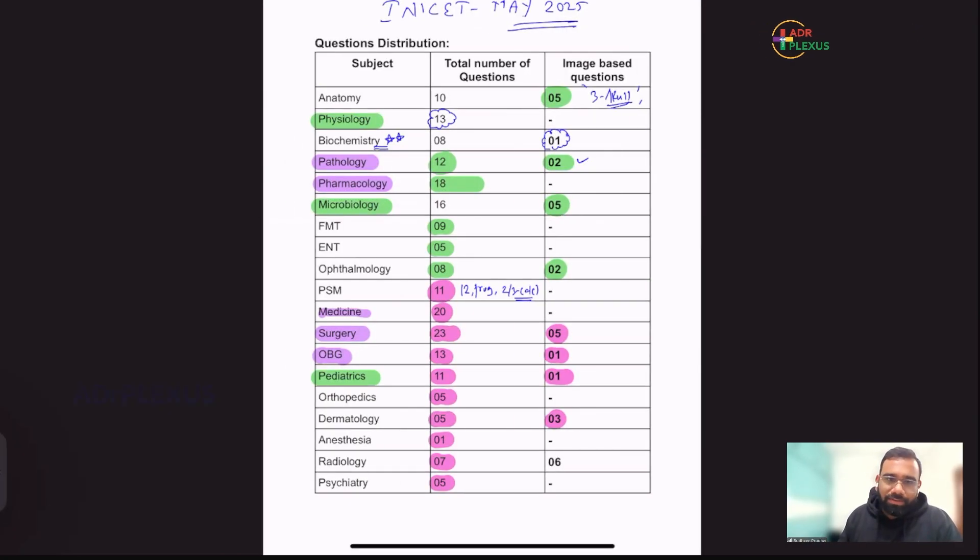As usual, the dominant subjects, patho, pharma, and medicine, surgery, OBG part, apart from that, that will be the dominant part in both INICT as well as NEET-PG. But here, as we know in INICT, these first year and second year subjects, first year, second year, they clearly showed the domination part. They showed the domination part. So that's all about analysis of INICT, May 2025. Thank you all.